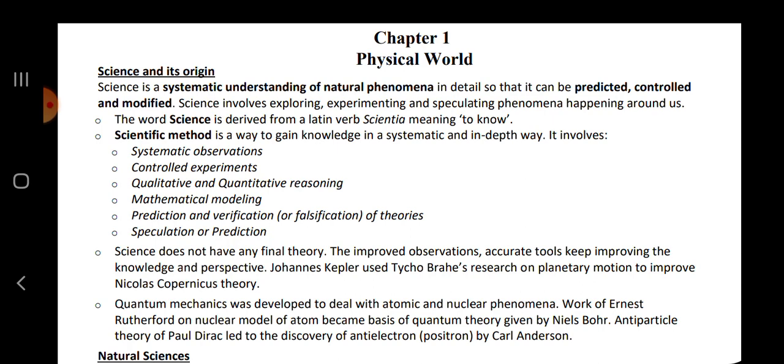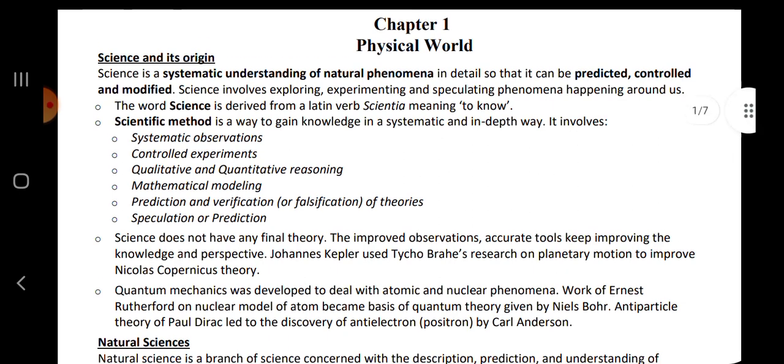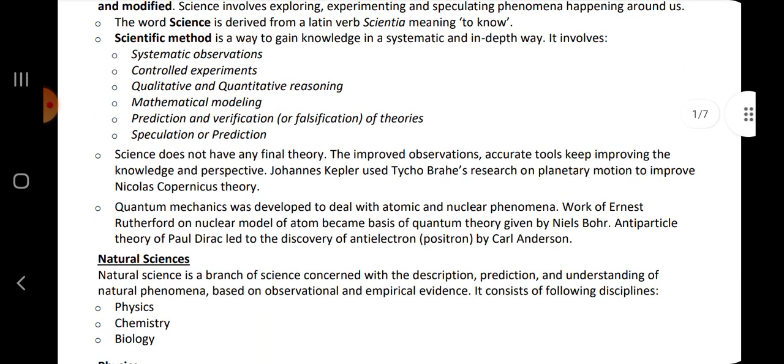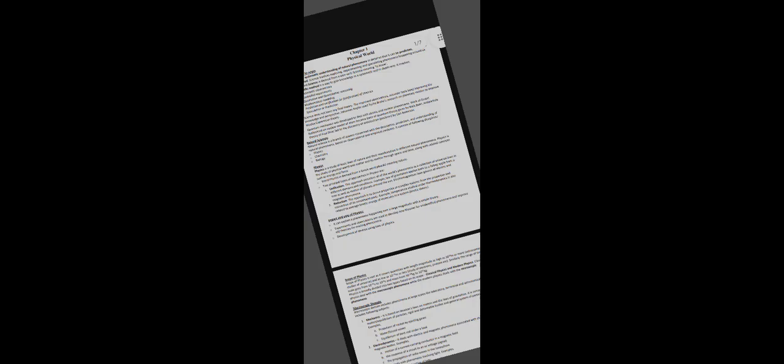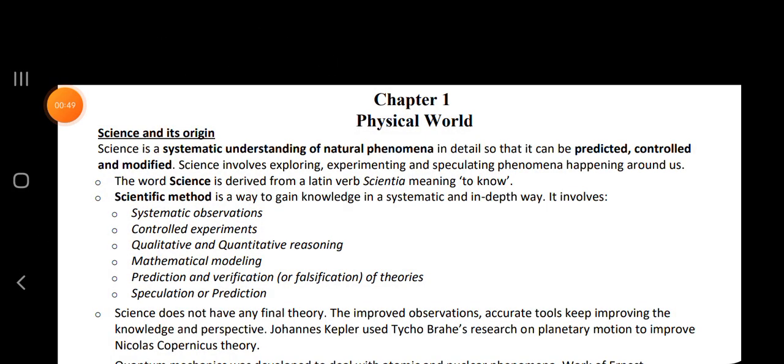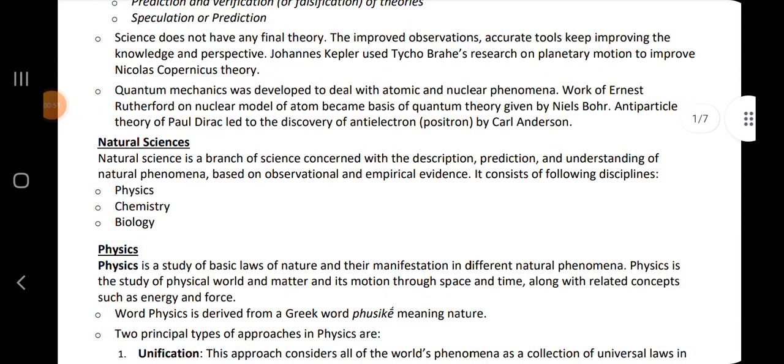Scientific method is a way to gain knowledge in a systematic and in-depth way. It involves systematic observations, controlled experiments and many more. Science does not have any final theory. The improved observation and accurate tools keep improving the knowledge and perspective. Johannes Kepler used Tycho Brahe's research on planetary motion to improve Nicolas Copernicus's theory.